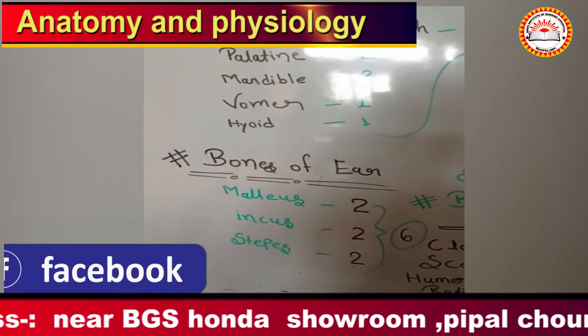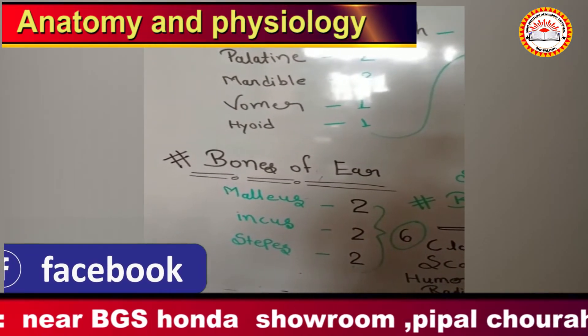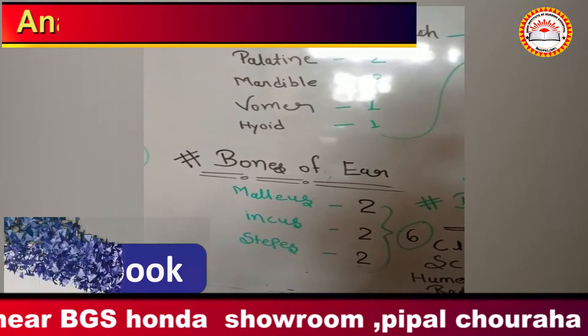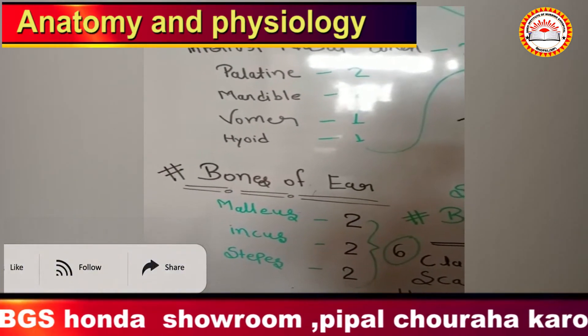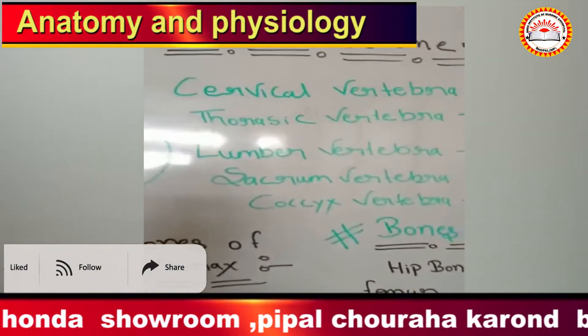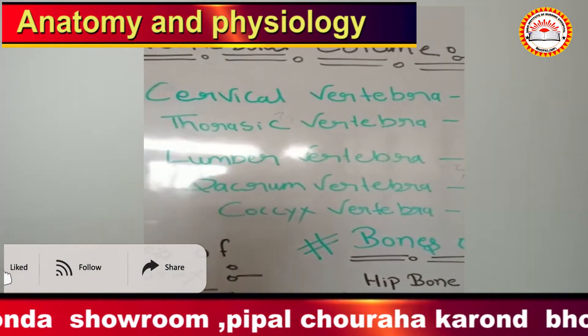Bones of the ear — total number of 6 bones: malleus 2, incus 2, stapes 2.